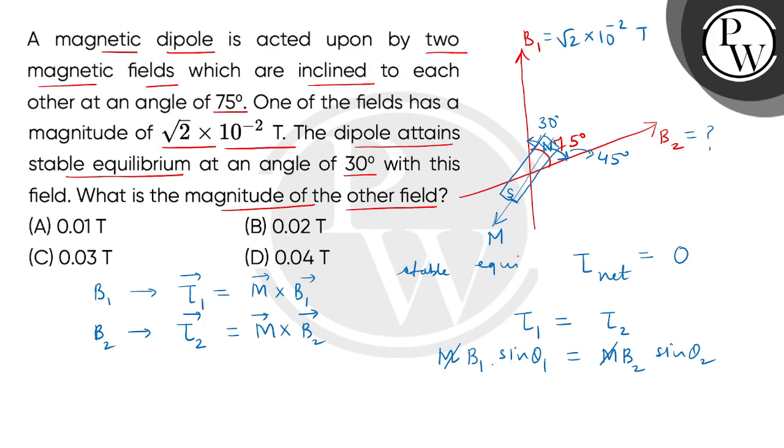Now when we put values, B1's value is square root 2 multiplied by 10 to the power minus 2, theta1's value is 30 degrees, and divide it by sin of 45 degrees.